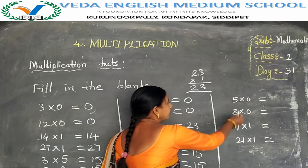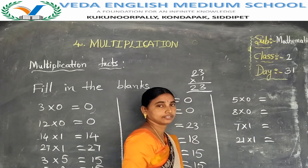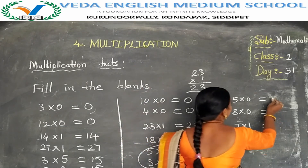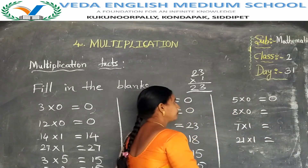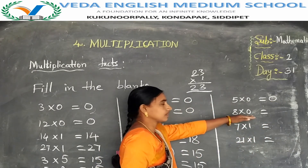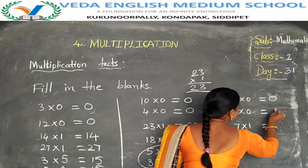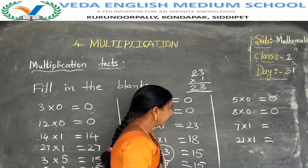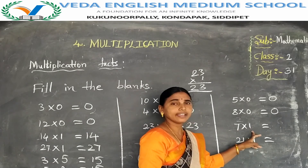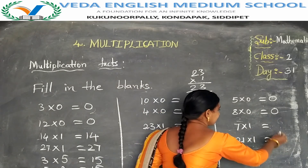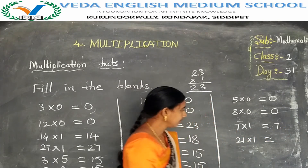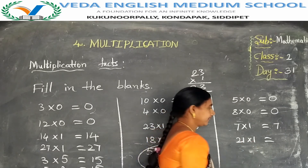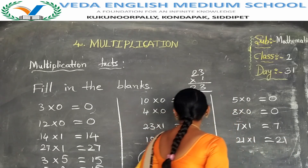5 zeros are 0 — multiply by 0. Also 8 zeros are 0. Multiply by 1: 7 ones are 7. And 21 ones are 21.